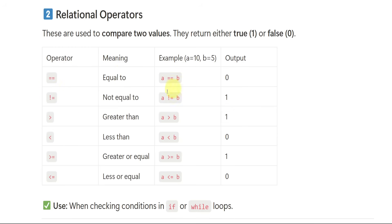When you keep double equals (==), not single equals, then it means equal to in programming. Like, A double equals B — both are different numbers, so it is false, and it will give you 0. You need to understand that 0 means false.